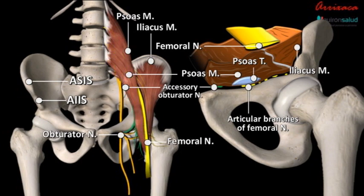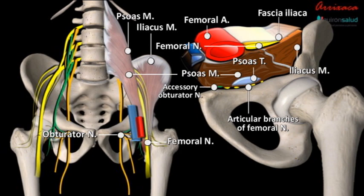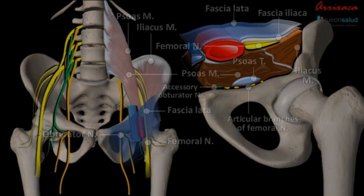The iliopsoas muscle covers all the aforementioned articular branches. The fascia iliaca covers the iliopsoas muscle, while the femoral nerve lies in a groove between the iliacus and the psoas muscle. The fascia lata is the deep fascia of the thigh; it encloses the thigh muscles and forms the outer limit of the fascial components of the thigh.